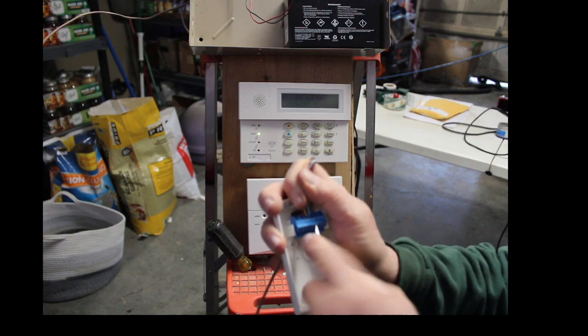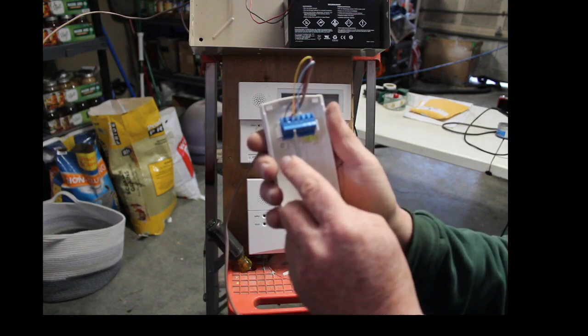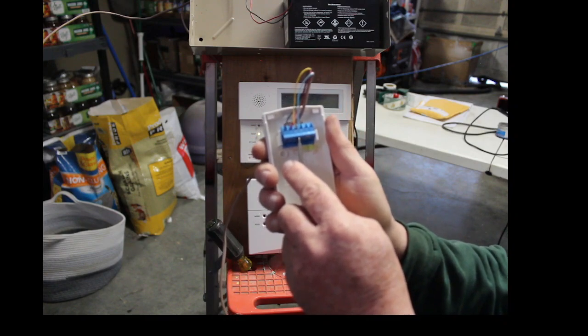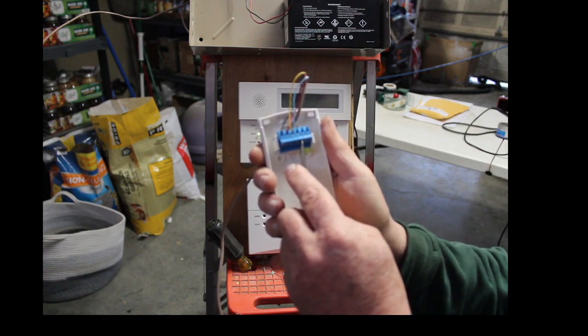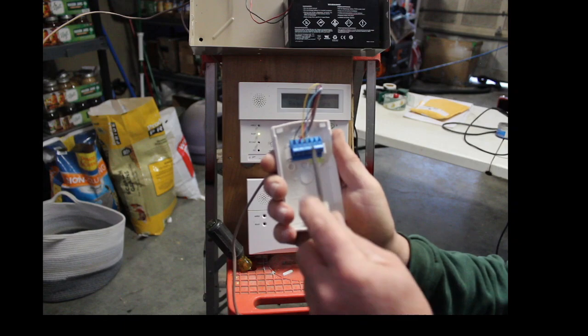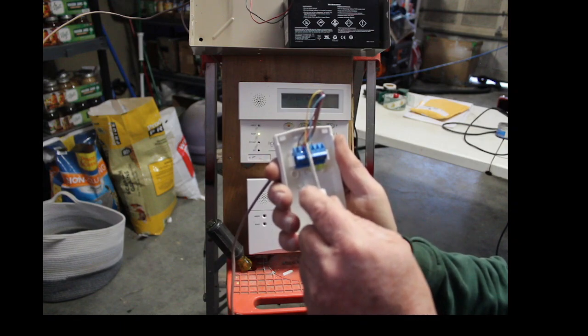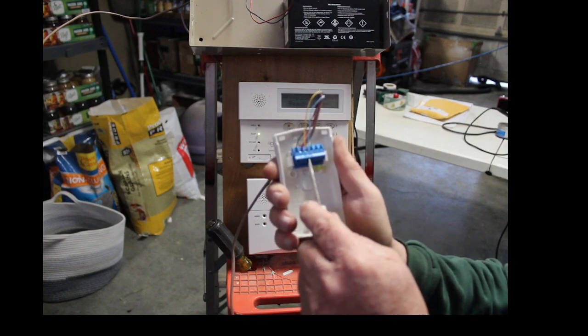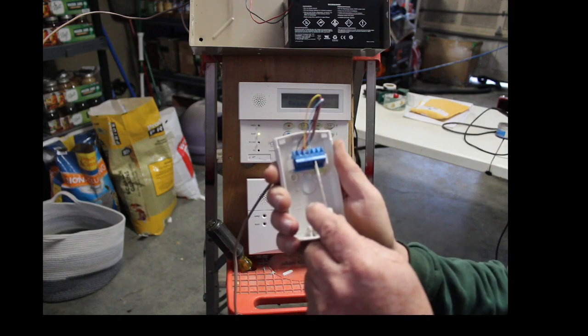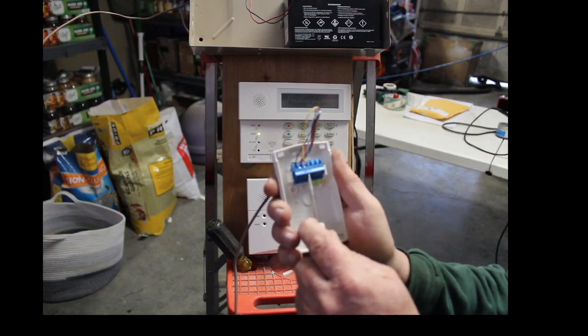Now, there are other motion detectors out there on this terminal strip. It'll say negative, positive. It'll say calm, COM. And then it'll say NC. That type of motion detector, you want to put one of your wires, your loop wires, either the yellow or blue, under one under the calm, and one under the NC. That just means common and normally closed.